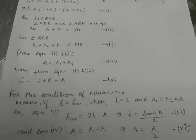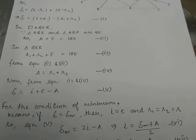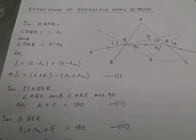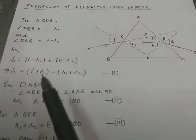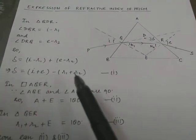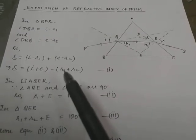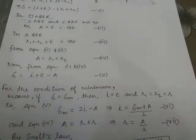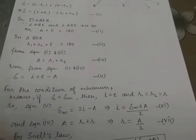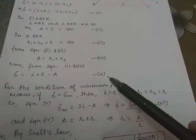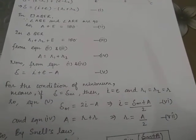From equations one and four: in equation one, δ equals i plus e minus (r1 plus r2). This r1 plus r2 can be replaced by A, so it becomes δ equals i plus e minus A. This is equation number five.